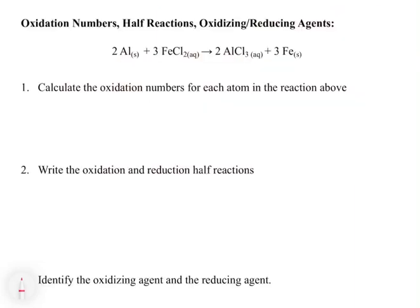Now let's work out the oxidation and reduction half-reactions for a second example. Remember, step one is to write the net ionic equation. In this case, the chlorides are going to go away when you write the net ionic. The net ionic equation is: 2 Al(s) + 3 Fe2+(aq) → 2 Al3+(aq) + 3 Fe(s). I removed the chloride, which is just a spectator on both sides.